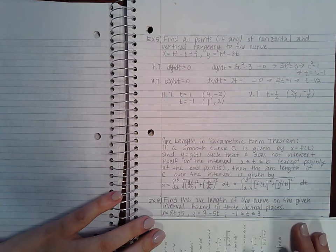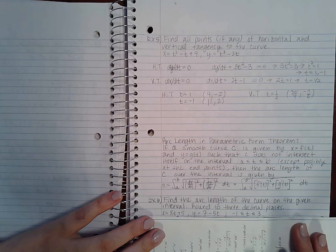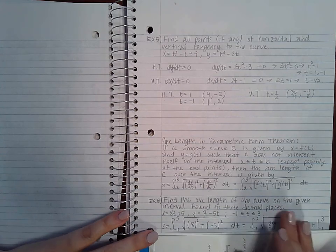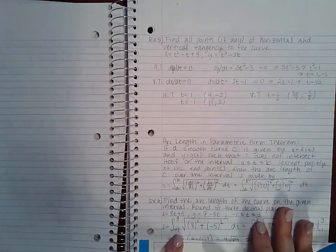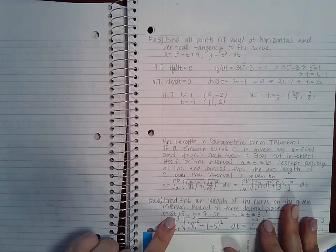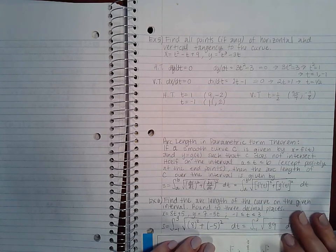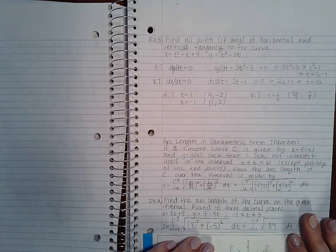So example 6 says find the arc length of the curve on the given interval, round to three decimal places. We have x and y here, and if I follow the formula my t values are from negative 1 to 3. The derivative of x is 8 and the derivative of y is negative 5. If I square each and add them I end up with the square root of 89.